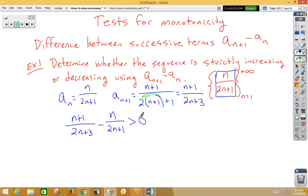Now we have unlike fractions, so we need to make a common denominator. So the n plus 1 is going to need to be multiplied by the 2n plus 1.